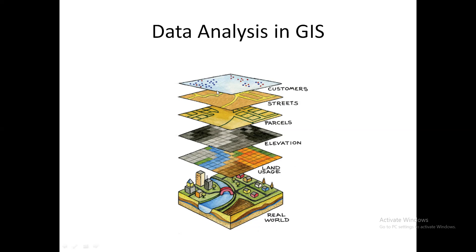The first subtype is called customer service of people with spatial data. Spatial data is majorly in two types: one is vector data and raster data. In vector data, we will be having three formats of data.